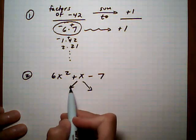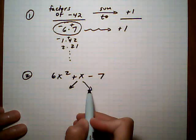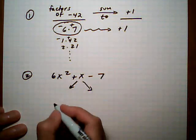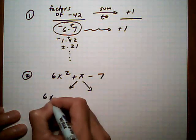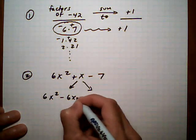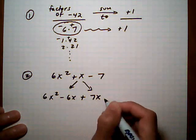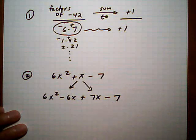So the middle term is going to become minus 6x plus 7x, which still equals plus x. So we do a rewrite step. 6x squared minus 6x plus 7x, and take away 7.